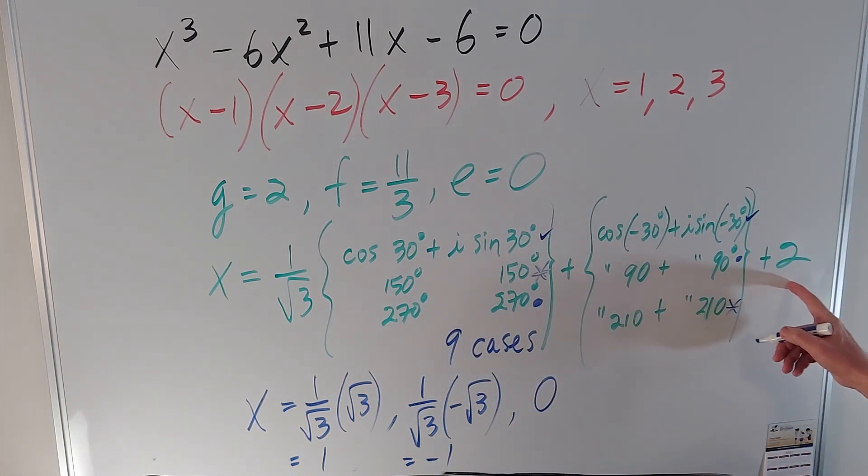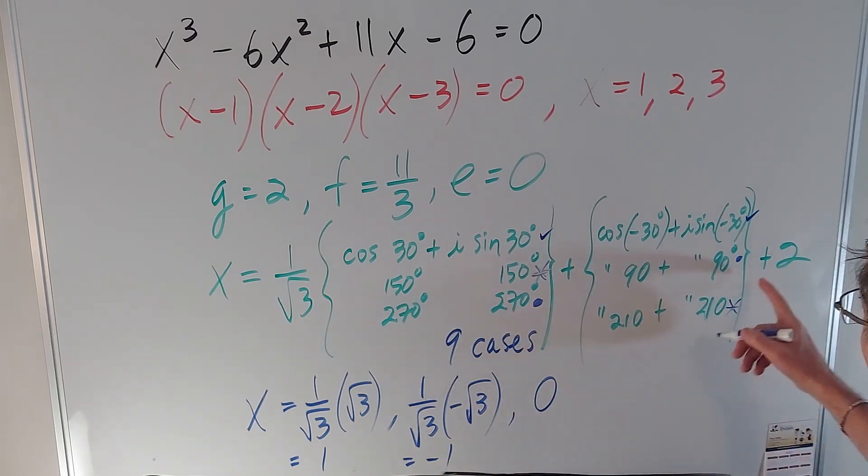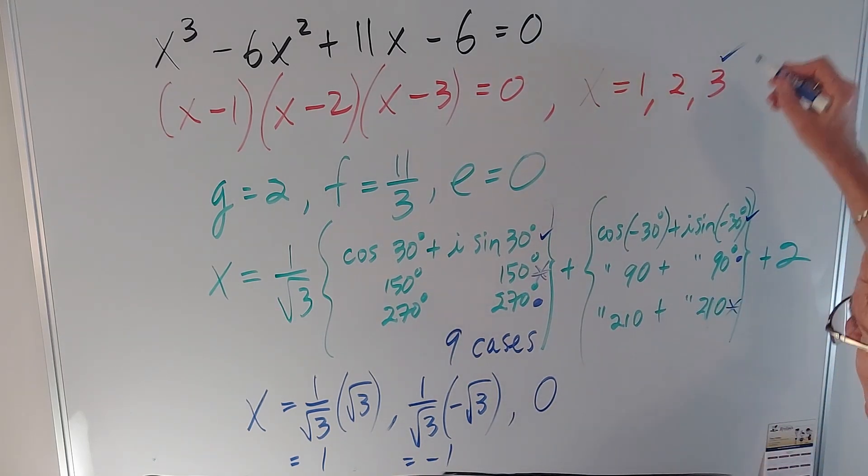And if I add 2, I'm going to get the three solutions: 1 plus 2 is 3, negative 1 plus 2 is 1, and 0 plus 2 is 2.